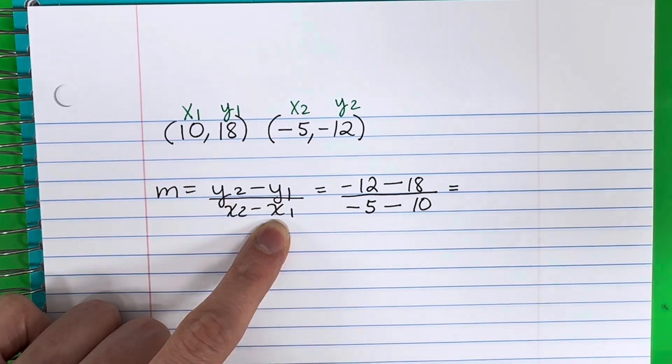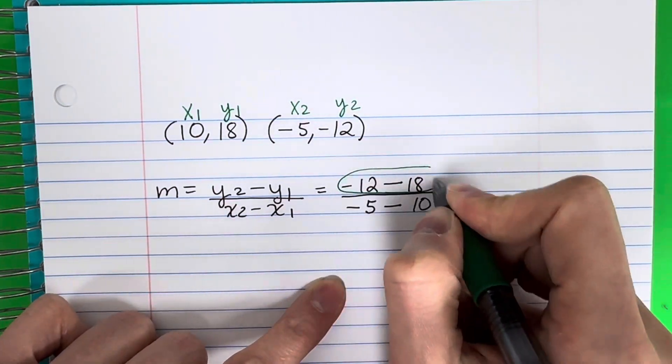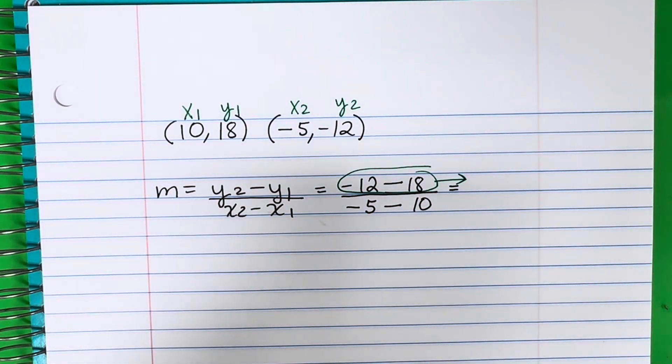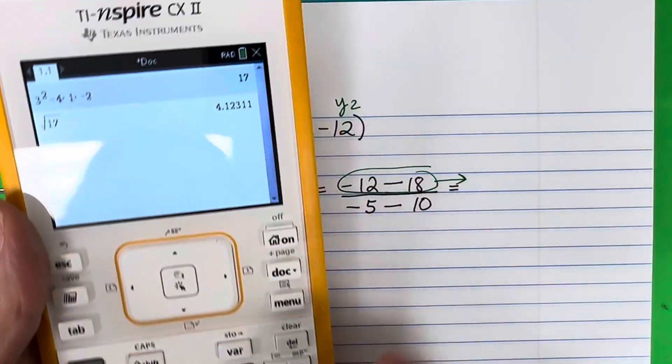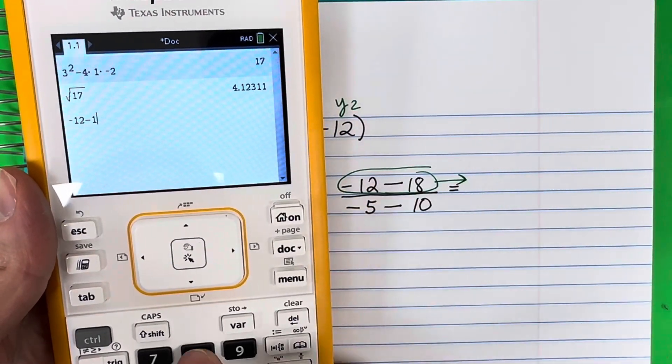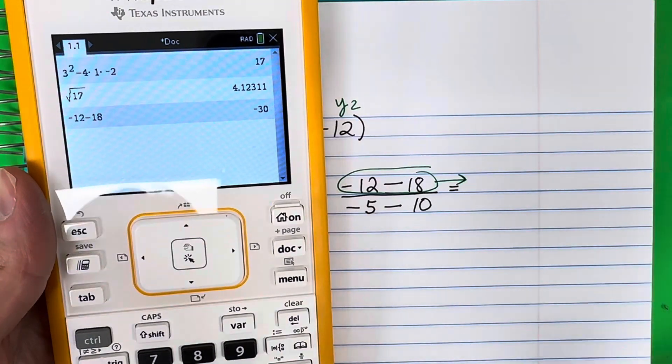First, put what is on top in the calculator. So negative 12 minus 18. Let's stick that in the calculator. Negative 12 minus 18, that is negative 30.